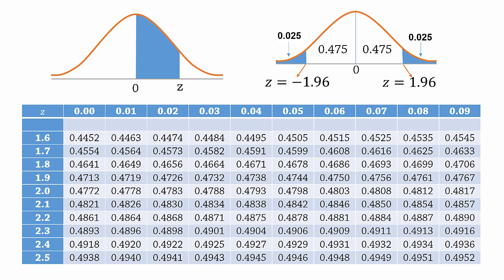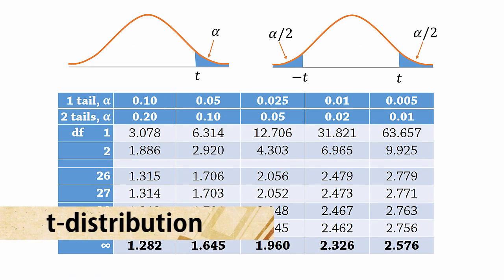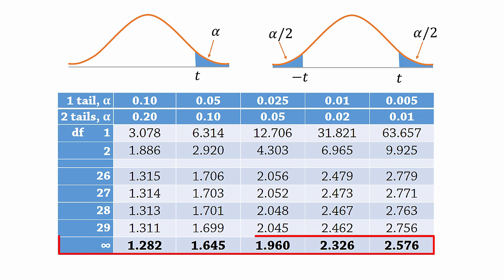Sometimes we can also use the student t distribution table to find the z-critical value. When you scroll to the bottom of most t tables, you either find infinity or z on the last row here. This is because the t distribution approaches the z distribution as the sample size becomes very large. So these are actually z-critical values. And if you check under 0.025 in 1 tail or 0.05 in 2 tails, you will see that the corresponding critical value here is 1.96.